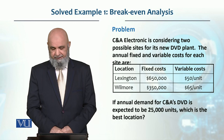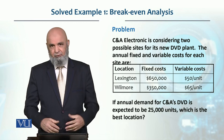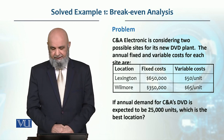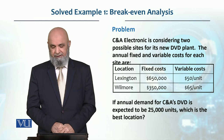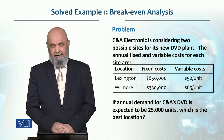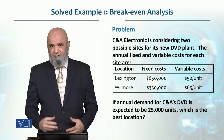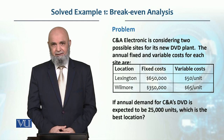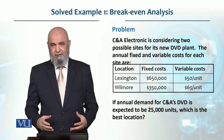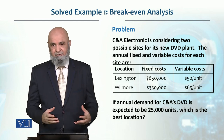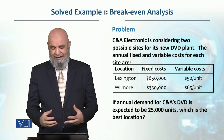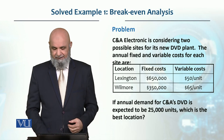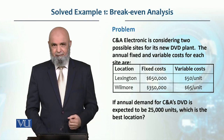If the annual demand that they have forecasted is 25,000 units, then you have to identify which is the best location given these fixed and variable costs and the sale forecast.